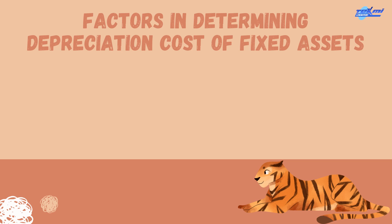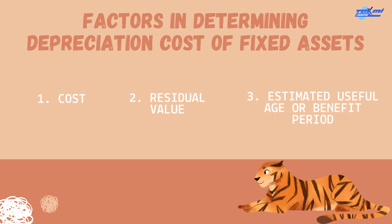Factors in determining depreciation costs of fixed assets. First is cost — money spent and other costs that occur in obtaining an asset and placing it so that it can be used. Second is residual value — what is received when the asset is sold, exchanged, or disposed of when no longer used, less the cost incurred when selling or exchanging. Last is estimated useful age or benefit period, which is influenced by the way of maintenance and the policies adopted for reparation, and can be expressed in a period of time, units of production, or units of working hours.